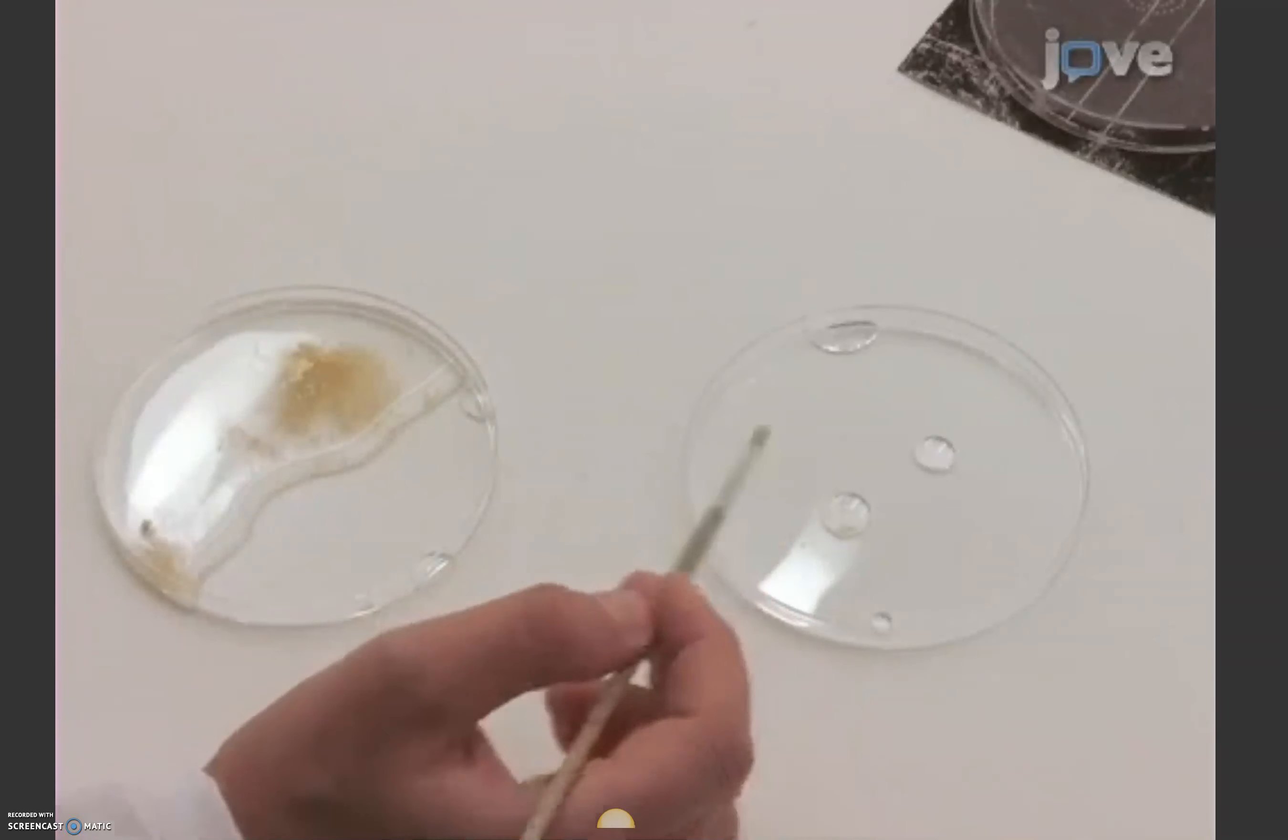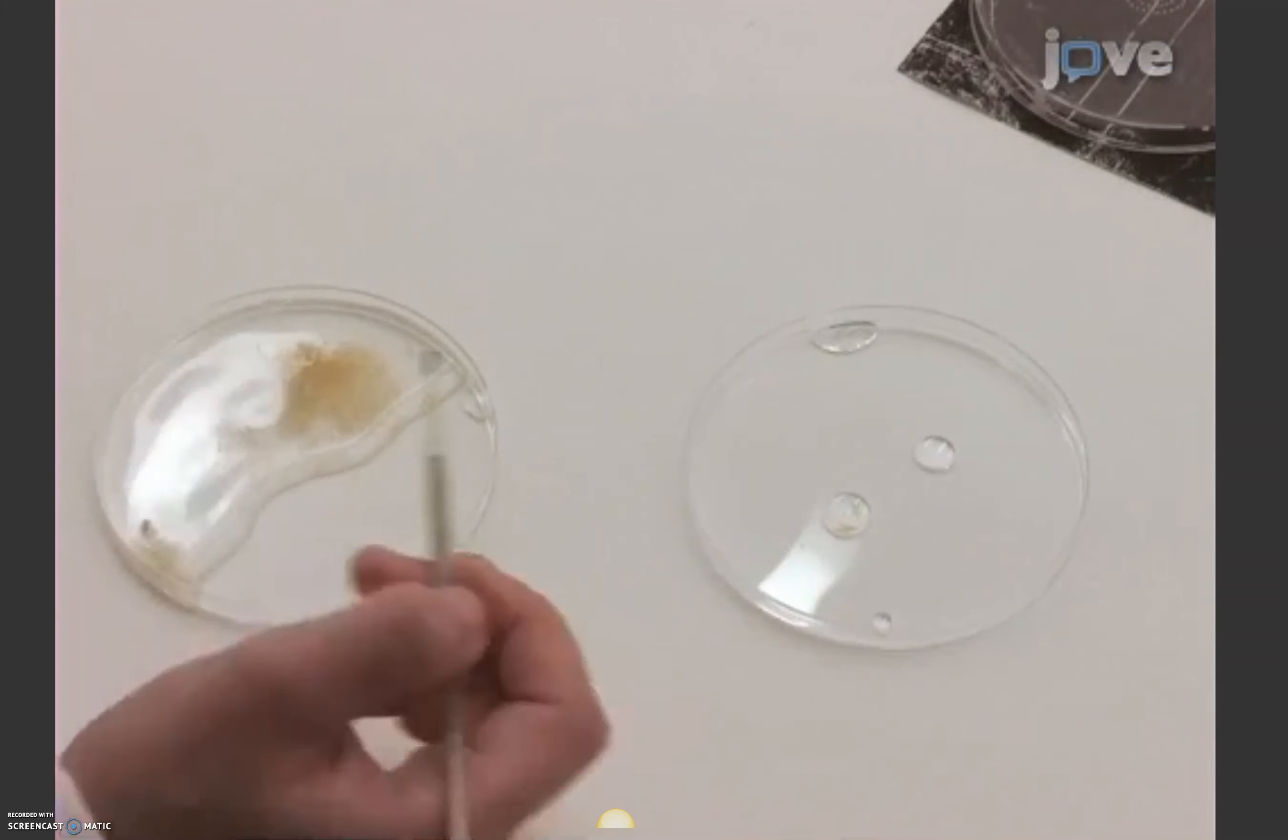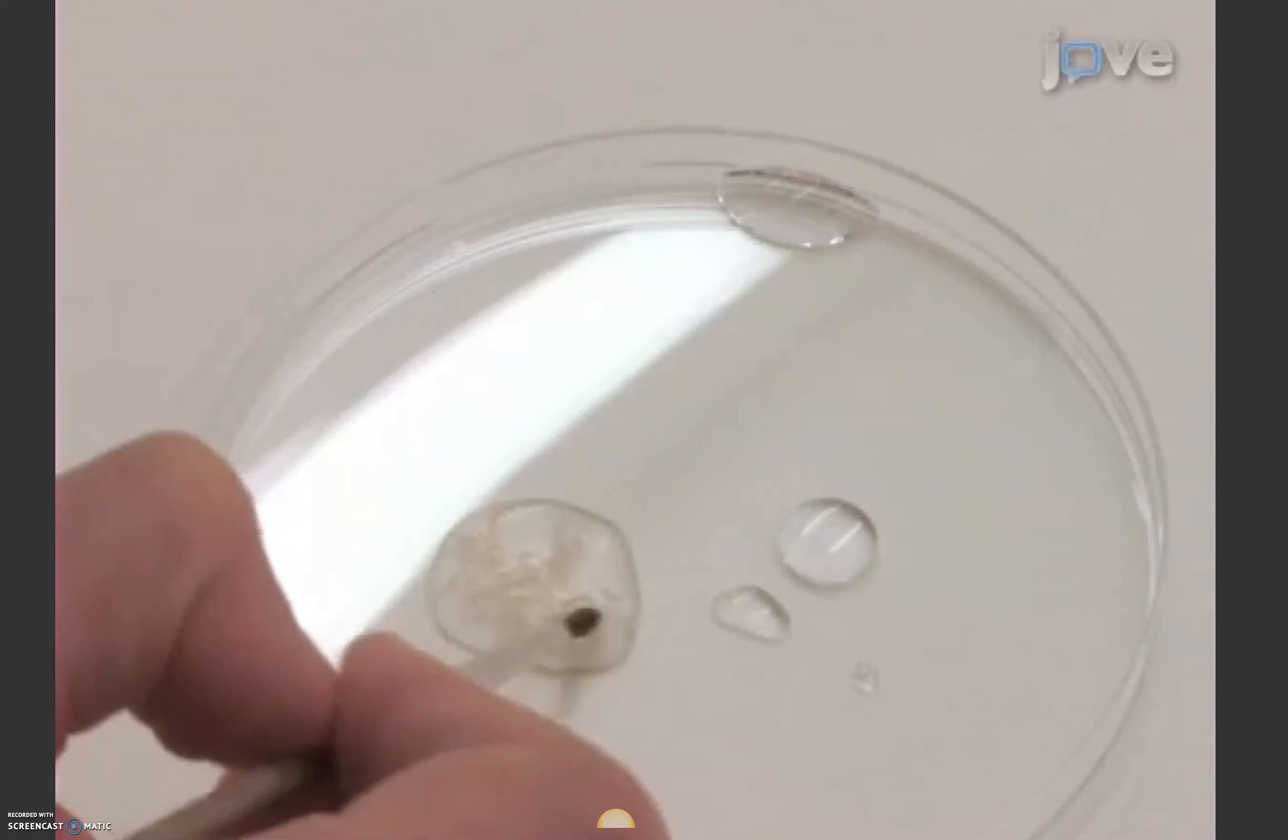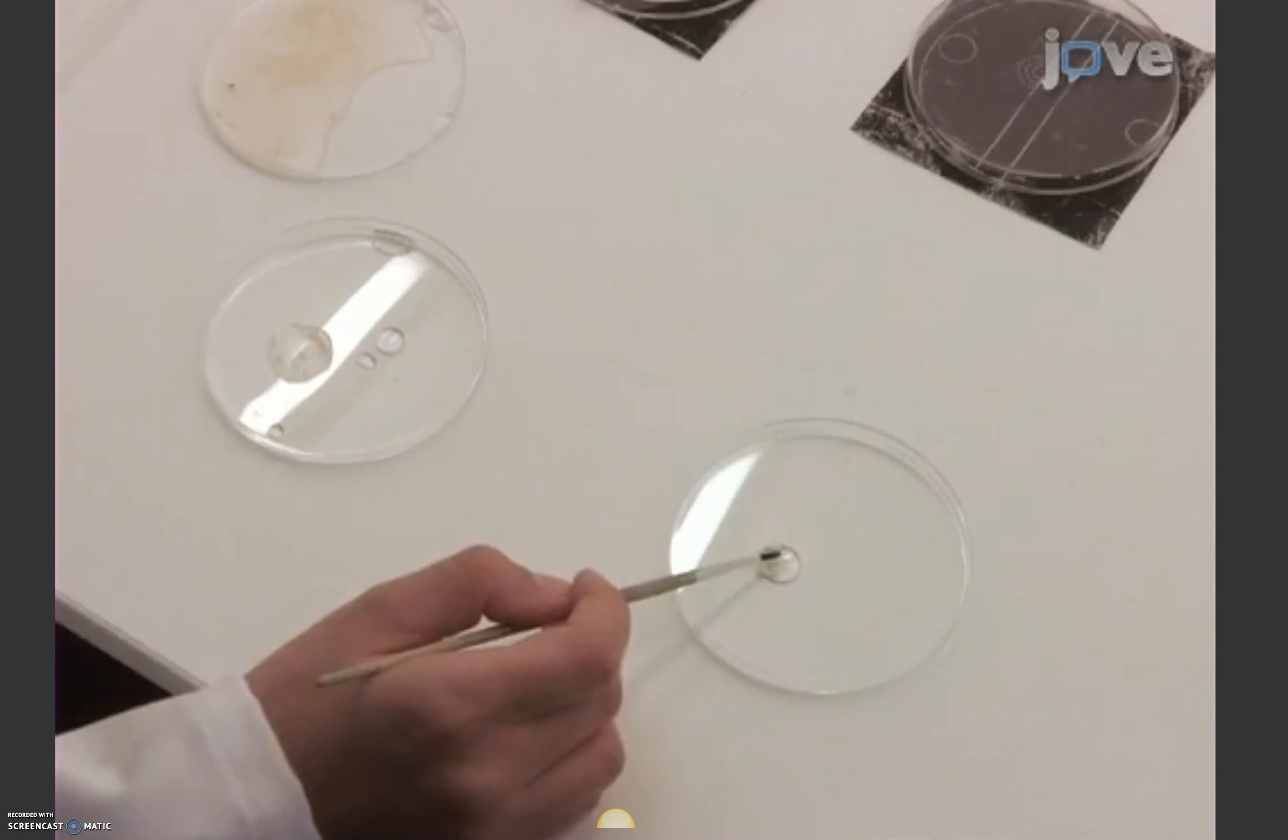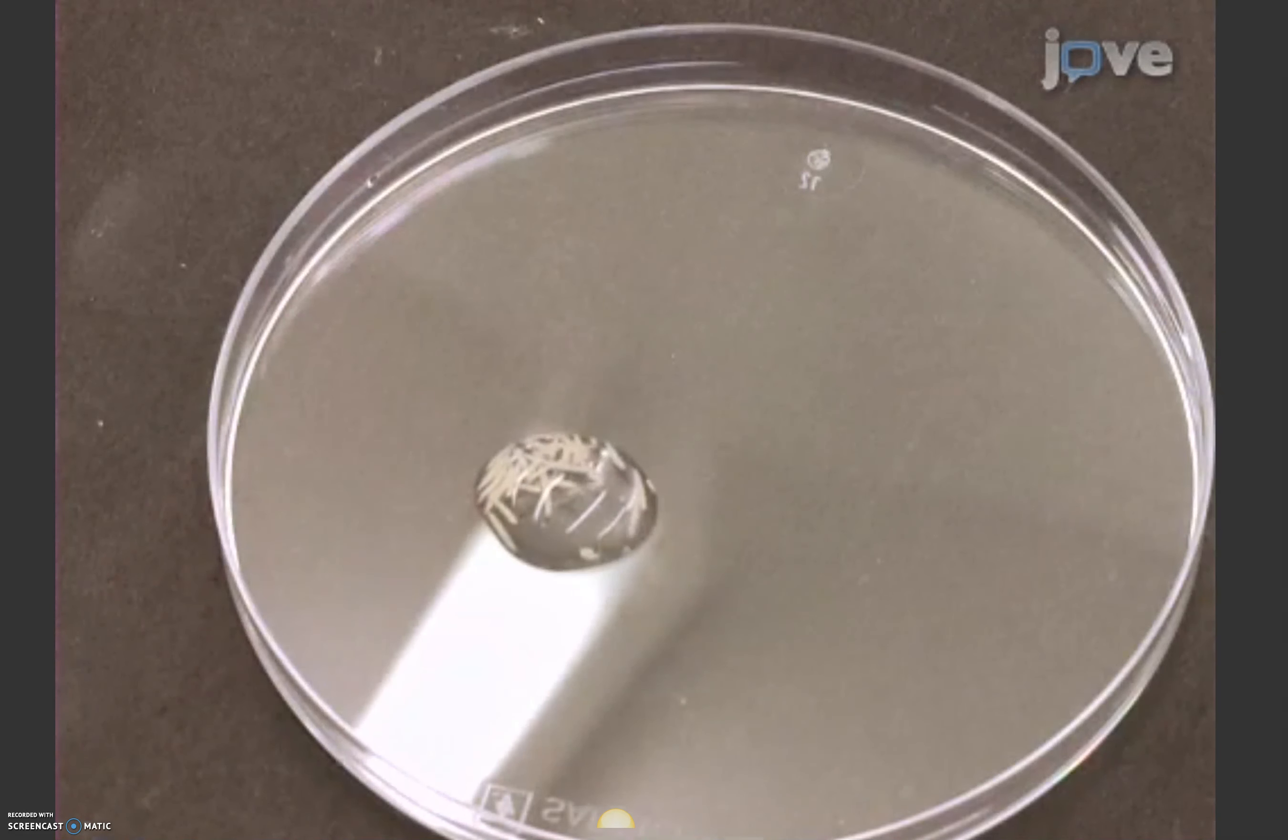Transfer the larvae to a petri dish that contains a few drops of tap water, and carefully move them forwards and backwards with a brush. Then, transfer the larvae to a second petri dish that also contains some drops of tap water. There, inspect the larvae for food paste on their body walls.